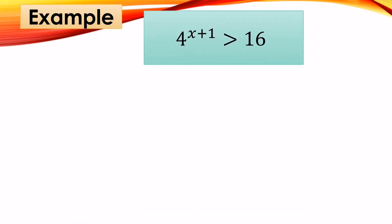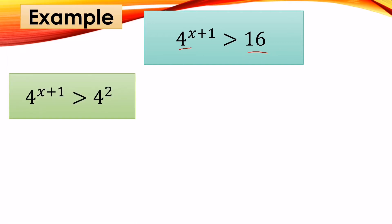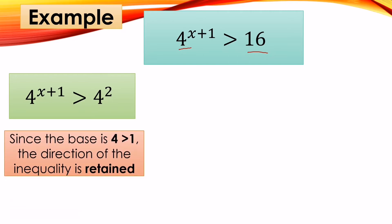Let's have an example: 4^(x+1) > 16. The first thing we do is get the common base on both sides. The base on the right side is 4, so we rewrite it as 4^(x+1) > 4^2, since 4 squared equals 16. Since the base 4 is greater than 1, the direction does not change — the greater than symbol is retained.